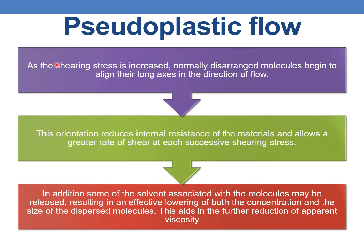In the case of linear polymers or long-chain molecules, as the shearing stress is increased, normally disarranged molecules begin to align along their axis in the direction of flow. This orientation reduces the internal resistance of the material and allows a greater rate of shear at each successive shearing stress. In addition, some of the solvent associated with the molecules may also be released, resulting in an effective lowering of both the concentration and the size of the dispersed molecules, which aids in the further reduction of apparent viscosity. By this mechanism, as shearing stress is increased, the apparent viscosity of pseudoplastic materials decreases.